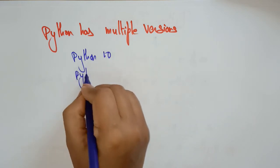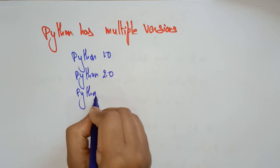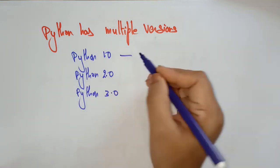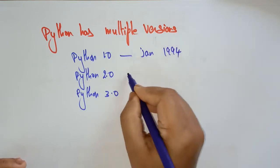Python 1.0, Python 2.0, Python 3.0. These are all the different versions. So, actually 1.0 is started on the January 1994. It was introduced on 1994.